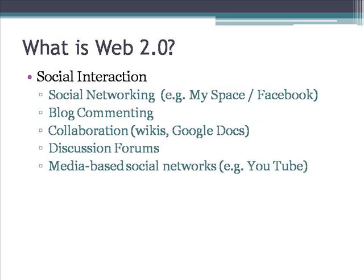The last aspect of Web 2.0 is social interaction. This has been made most common by social networking sites such as MySpace or Facebook, but also through commenting features on blogs and other websites, through collaboration facilitated by wikis or programs such as Google Docs in which multiple users can make changes to the same document, through discussion forums, or through social networks based around media, such as YouTube, which has powerful social interactive features as well.